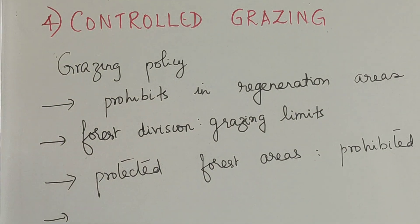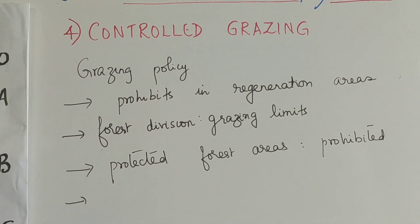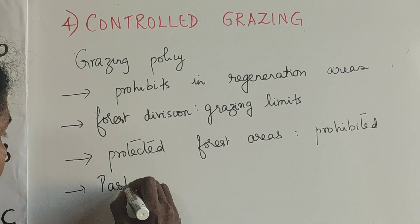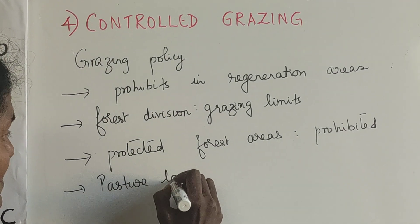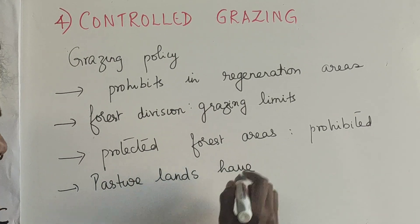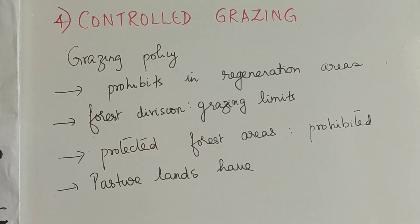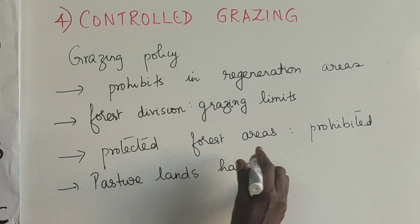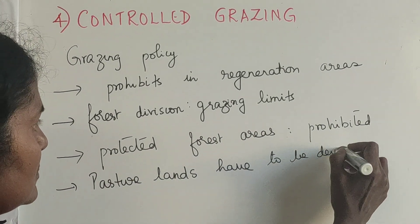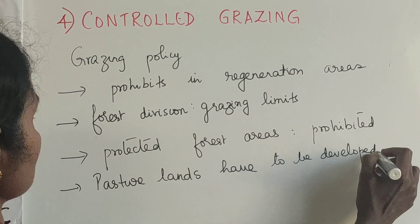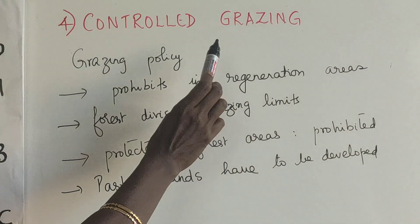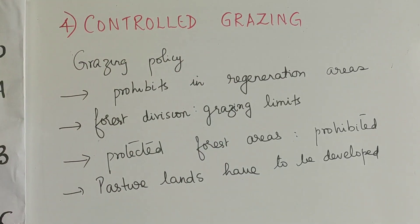Additionally, pasture lands have to be developed because the demand is high — livestock need grass — and so we have to develop pasture lands. These policies together bring grazing under a controlled manner.